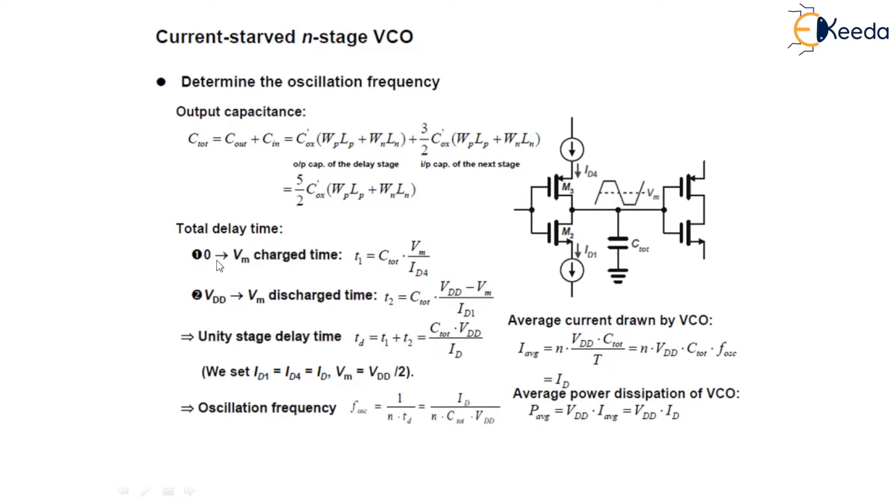The total delay time will be given as, for at zero voltage V_m, charge time will be T_1 equals C_total V_m upon I_D4. Unity stage delay time will be total time T_1 plus T_2, which will be equals to C_total into V_dd upon I_D. Average current drawn by this VCO is I_average equals n, the number of stages, into V_dd C_total upon T. That can be given as I_average equals n dot V_dd C_total F_oscillation.